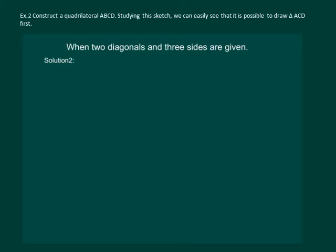Let us read the question and construct a rough figure side by side. The question says construct a quadrilateral ABCD given that BC is equal to 4.5 centimeters, AD is equal to 5.5 centimeters, CD is equal to 5 centimeters.